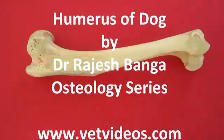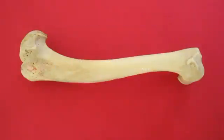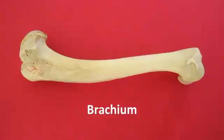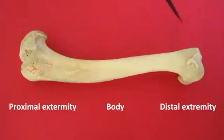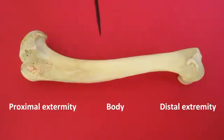In this video we will talk about the humerus of the dog. The area of the limb covered by this humerus is known as the brachium. This humerus has two extremities — proximal extremity and distal extremity — and a body. The body is further divided into four surfaces.